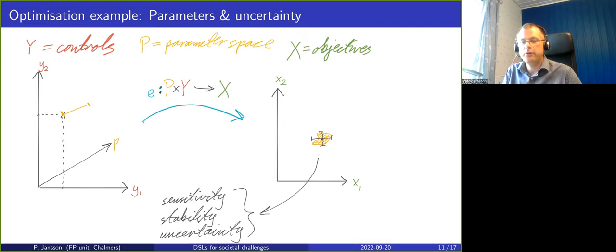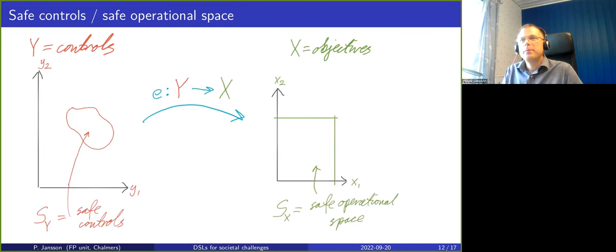For the rest of the talk I will ignore this uncertainty, at least in the diagrams. We should have it in the back of our minds. We go back to the setting where we just look at the control set and the objectives. Here on the right I've indicated with the green line that there is a certain part of the objective space which is called a safe operational space.